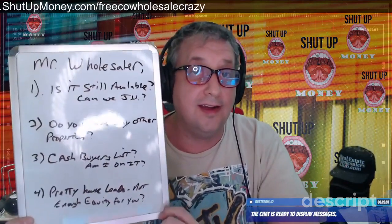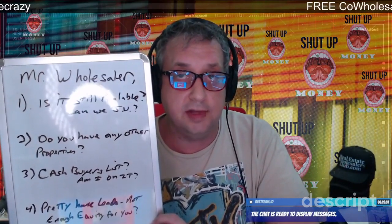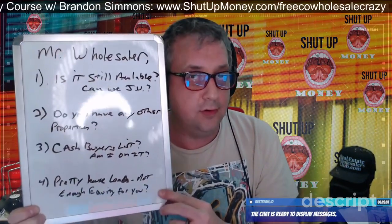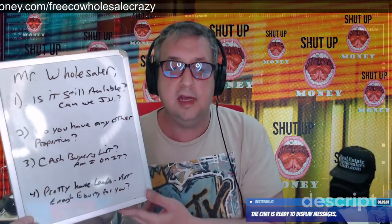Number four — and we leave this one out a lot — when you're talking to a wholesaler you found on Craigslist using the method shown step-by-step with cheat sheets in video number one of that free course, the fourth thing you want to do is ask them: 'Hey, do you have any pretty house leads that did not have enough equity for you to do the ugly house business?'